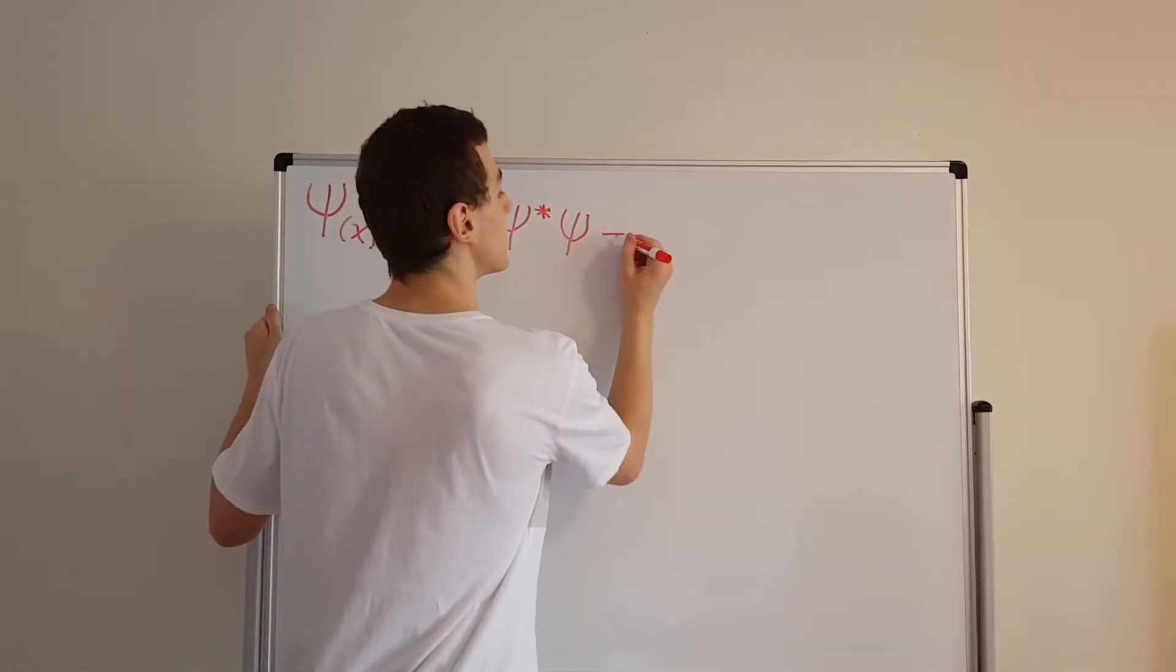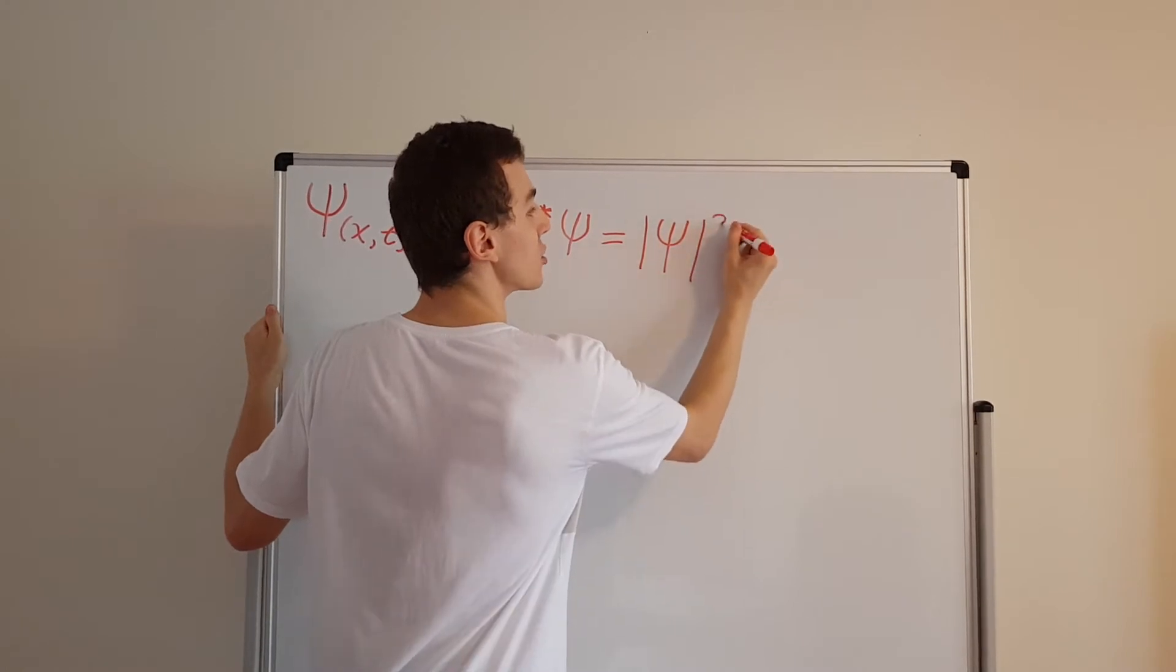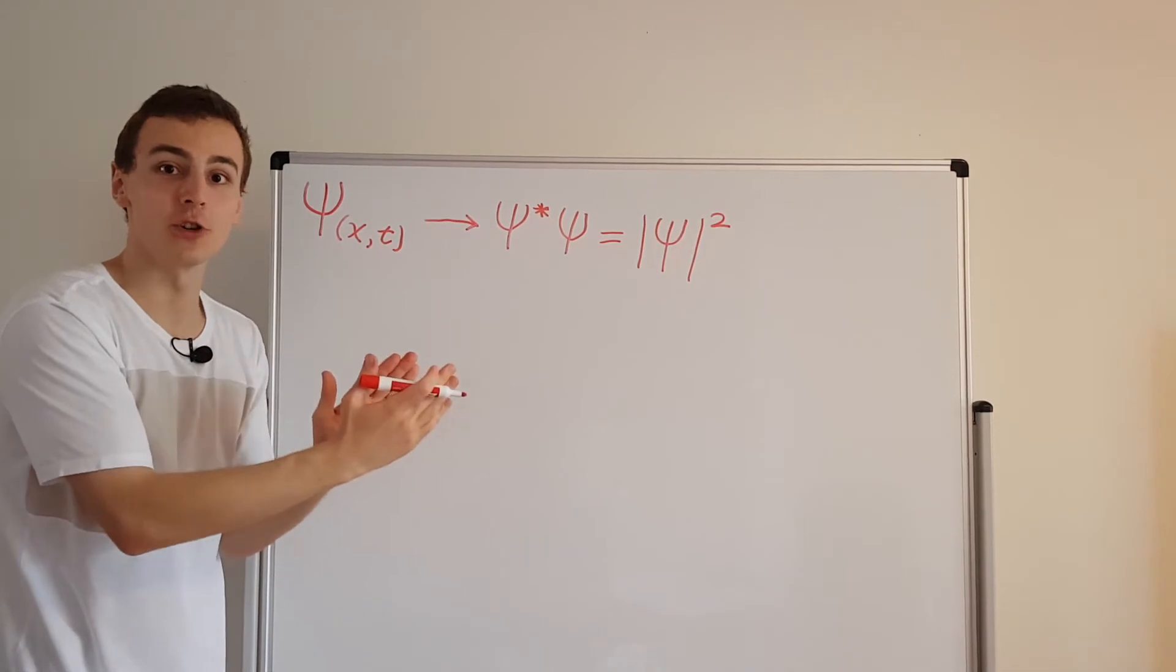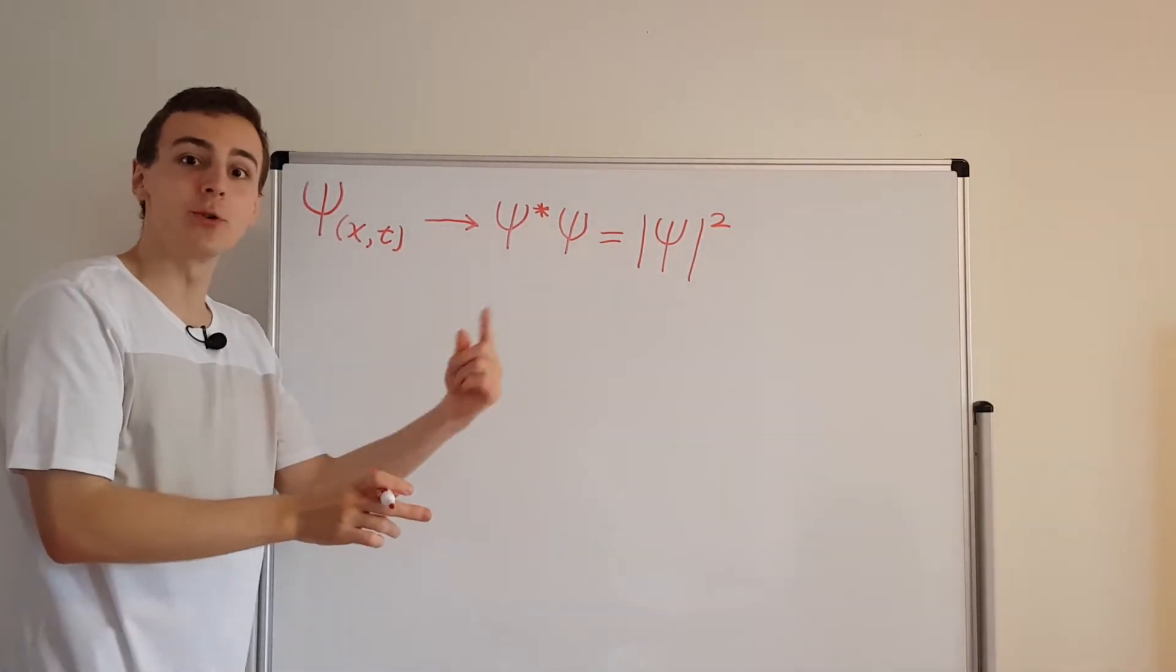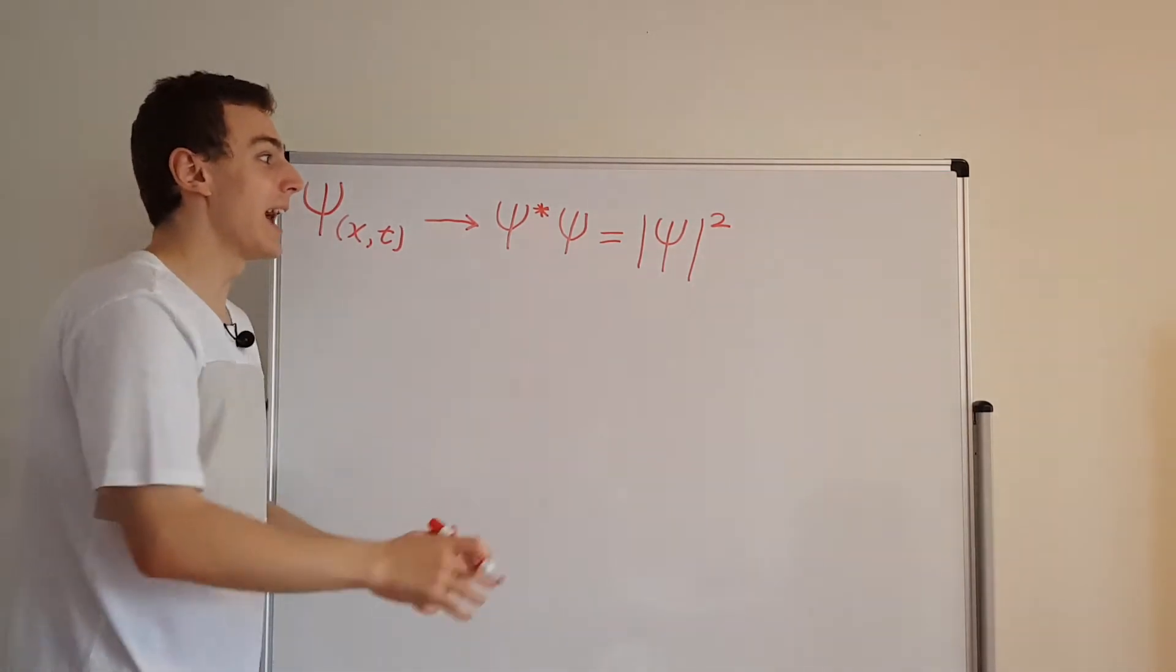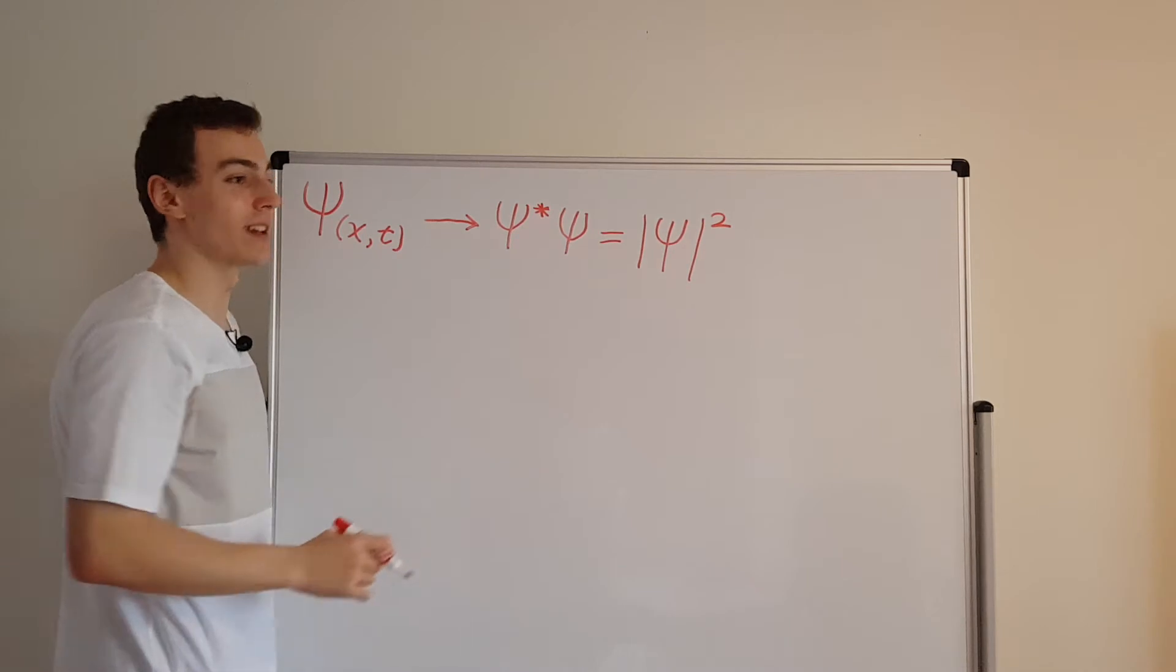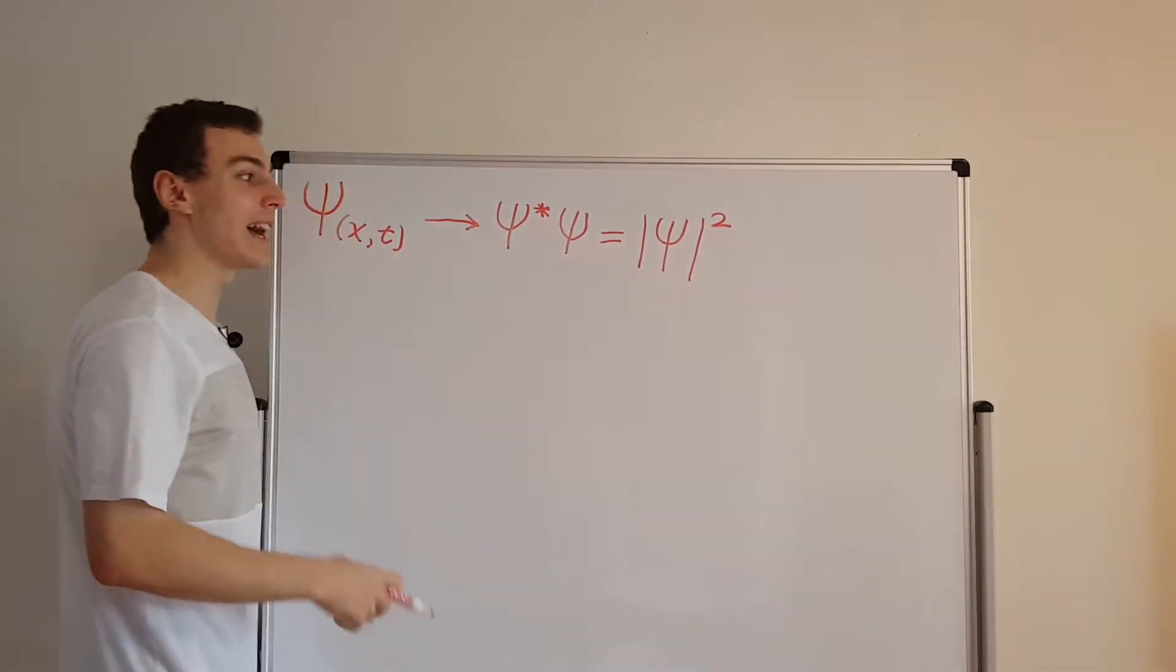And we can write that as psi magnitude squared. So these two bars over here are just like the absolute value or the magnitude. So it's taking how big this complex value is at each point and it's squaring it. That's what multiplying by the complex conjugate does. And this thing over here, this is what we can interpret as a probability.